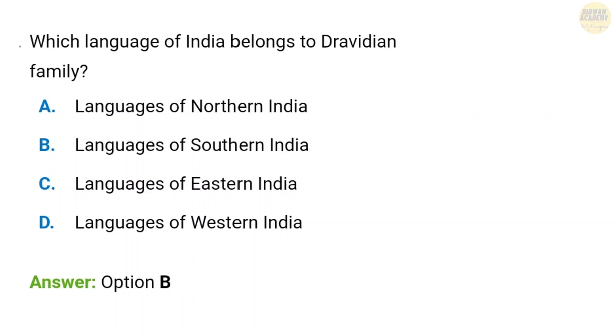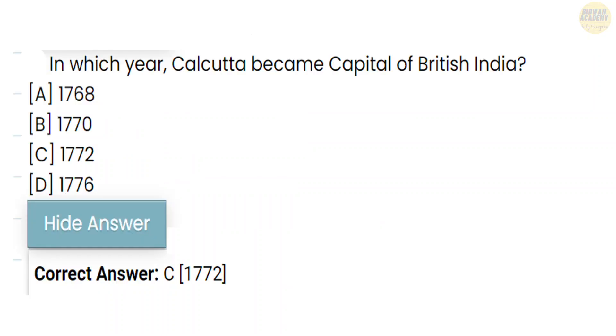Next question: Which language of India belongs to the Dravidian family? The languages of southern India belong to the Dravidian family. The correct answer is option B.